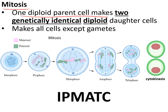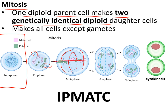Diploid cells are made by mitosis, in which one diploid parent cell makes two genetically identical diploid daughter cells. It starts with interphase — the day-to-day life of the cell. Then prophase: the nucleus breaks down and spindle fibres appear. In metaphase, chromosomes align along the centre. In anaphase, chromosomes move to each end down the spindle fibres. In telophase, new nuclei form, and cytokinesis is when the new cell membranes form.